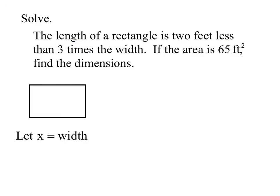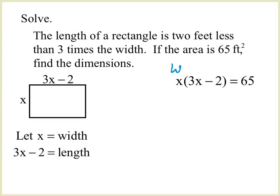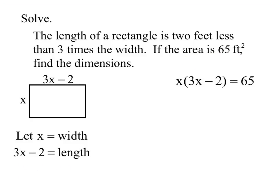Now we know what our length is and what our width is. We're going to use the area formula and substitute in. If there's an area formula, I want to see it used. They gave us that the area A equals 65, so I substitute that in. I do my distributing — it's just distributing — and I get 3X squared minus 2X equals 65.